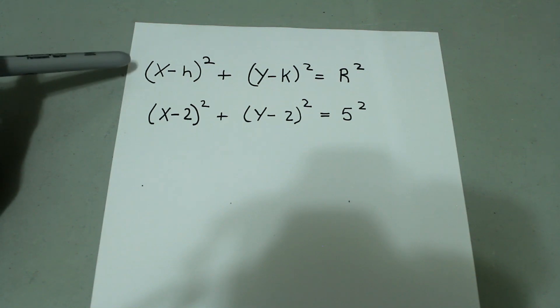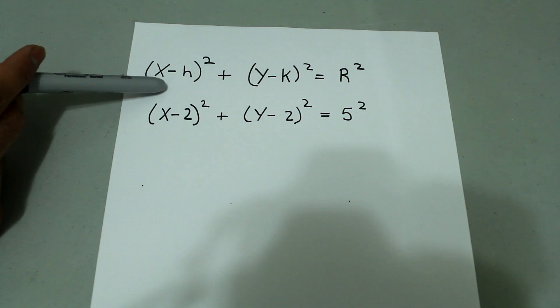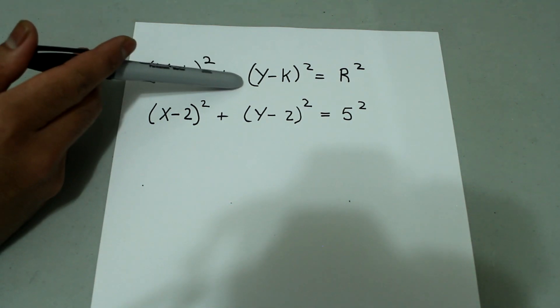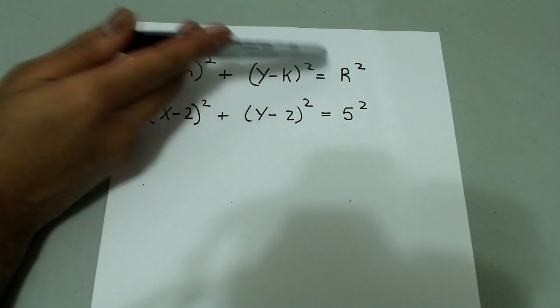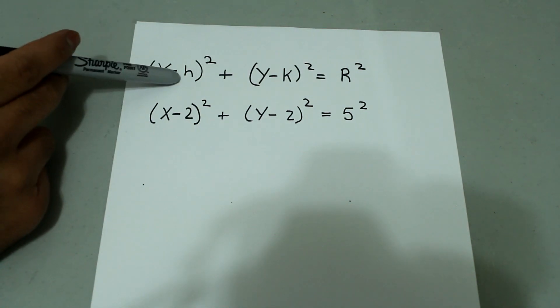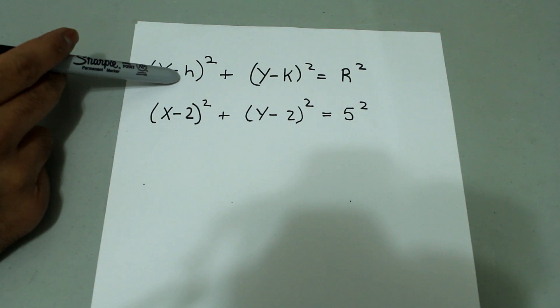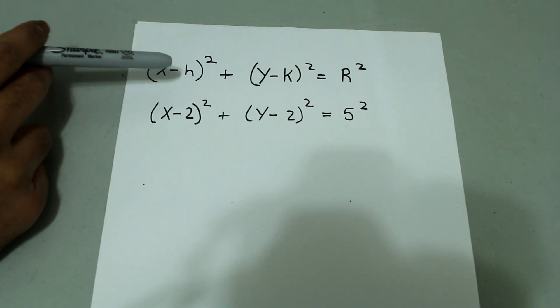A quick refresher, the equation of a circle is of the form x minus h squared plus y minus k squared equals r squared where r is the radius of the circle